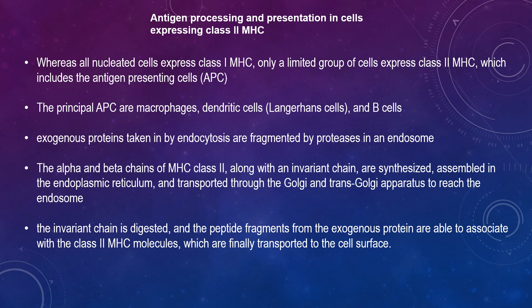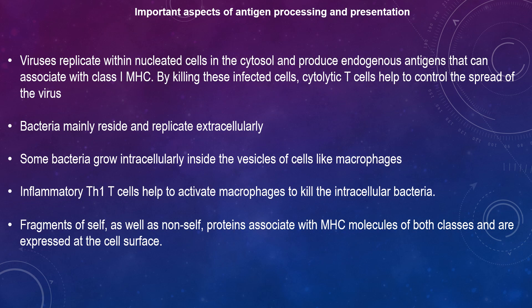Where the invariant chain is digested and the peptide fragments from the exogenous protein are able to associate with the class 2 MHC molecules, which are finally transported to the cell surface. One way of rationalizing the two different pathways is that each ultimately stimulates the population of T cells most effective at eliminating that type of antigen. Viruses replicate within nucleated cells in the cytosol and produce endogenous antigens that associate with class 1 MHC. By killing infected cells, cytolytic T cells help control the spread of the virus.